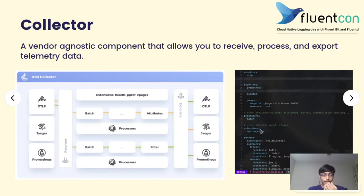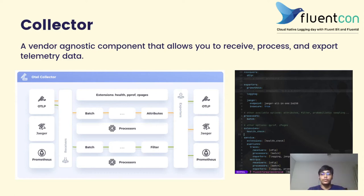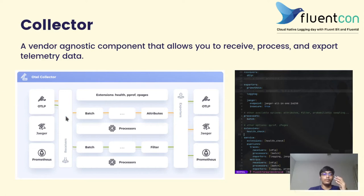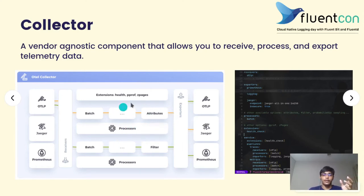The OpenTelemetry collector has units called pipelines that are mainly of three types based on the data that we deal with: traces, metrics, and logs. The basic logic of the collector is it will take telemetry data from the various receivers, pass them to the processors, and after processing it will send the data to the exporters that will export it to various backends.